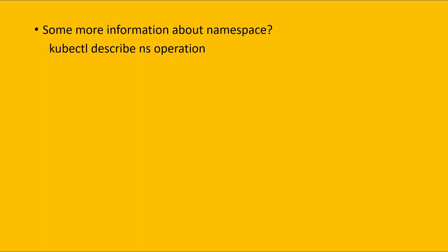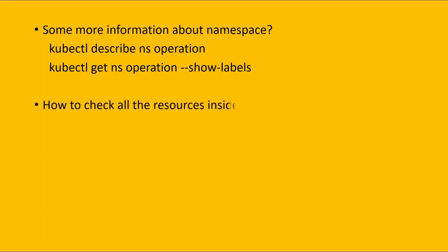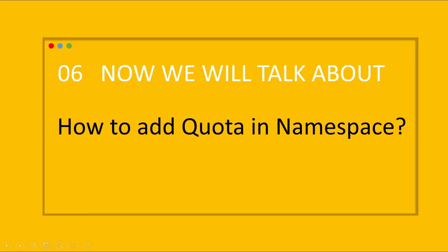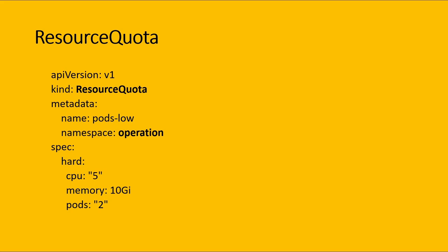For more information about namespaces, we can execute 'kubectl describe ns operation' to get more details about the operation namespace. We can also execute 'kubectl get ns operation' to retrieve its status.